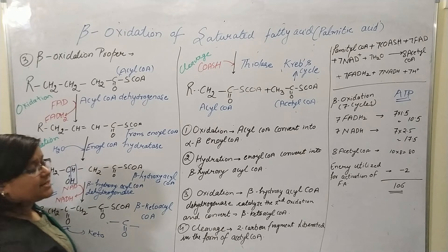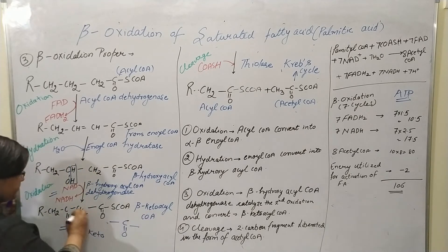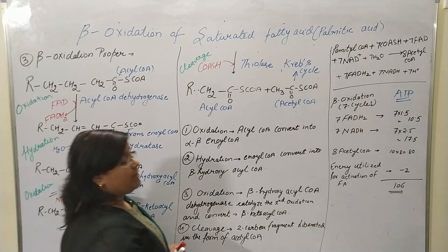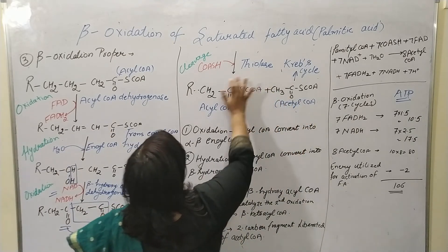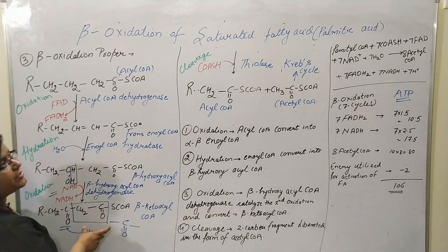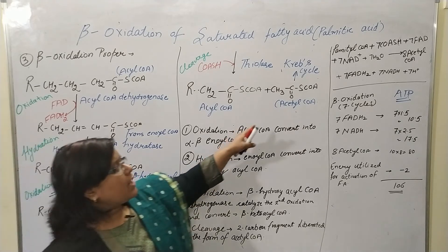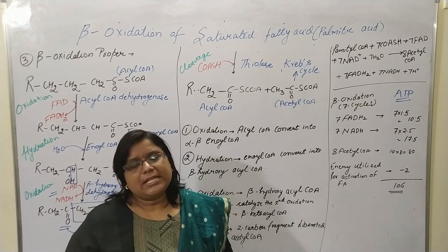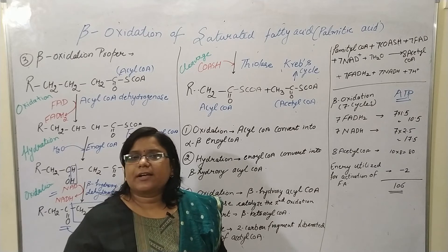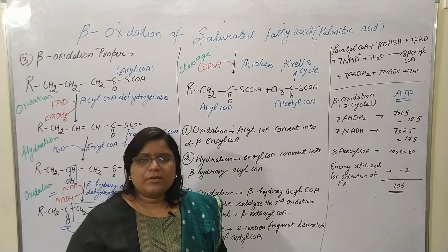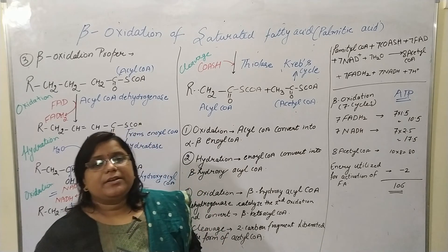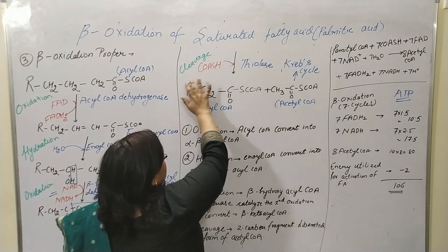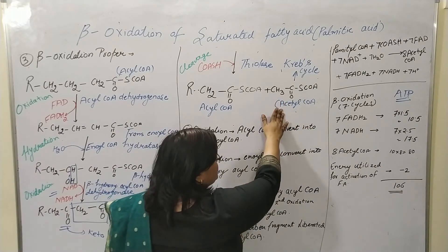The fourth reaction is the cleavage reaction. With the help of the enzyme thiolase, a two-carbon fragment is cleaved off as acetyl coenzyme A. This acetyl coenzyme A then enters the Krebs cycle, also known as the tricarboxylic acid (TCA) pathway. If you need to learn about the Krebs cycle, you can search for 'MS Science Academy TCA cycle' on YouTube.